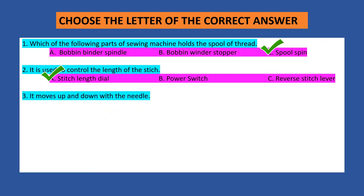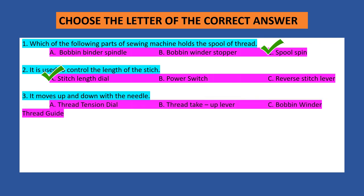Number three: It moves up and down with the needle. A. Thread tension dial. B. Thread take up lever. D. Bobbin binder thread card. The answer is letter B — thread take up lever.